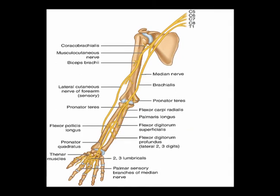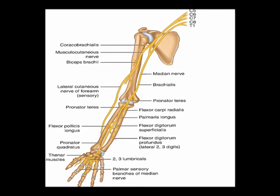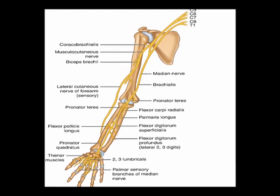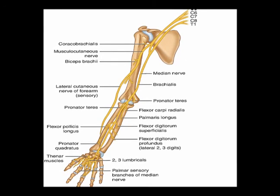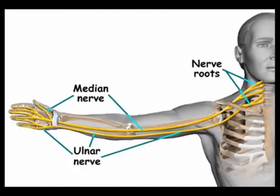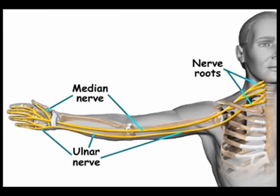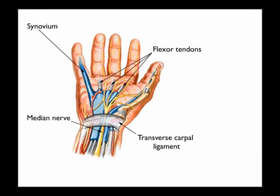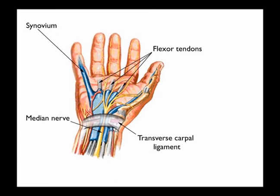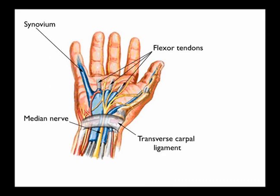The median nerve enters the forearm between the ulnar and the humeral heads of the pronator teres muscle. This is the site where the anterior osseous nerve branch is given off. The median nerve continues distally between the flexor digitorum profundus and the flexor digitorum superficialis muscles, then travels through the carpal tunnel at the wrist into the hand.